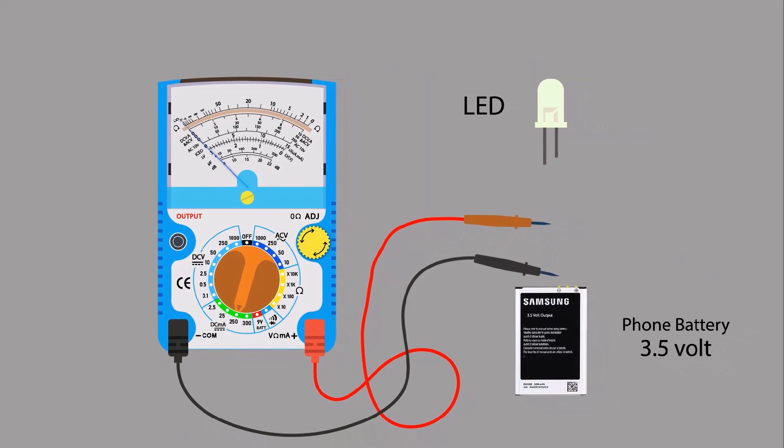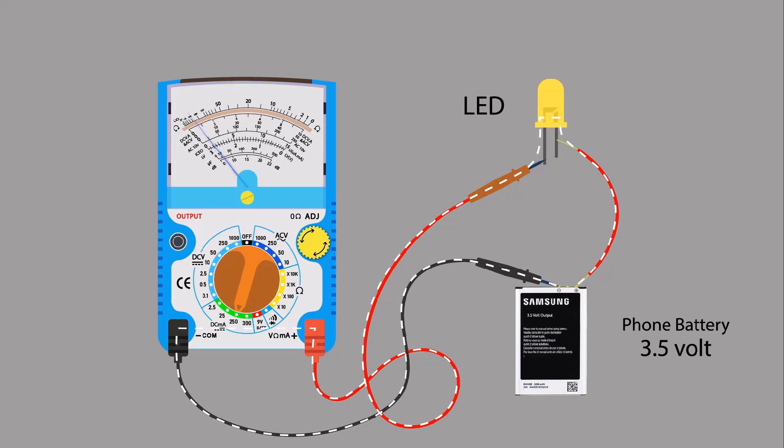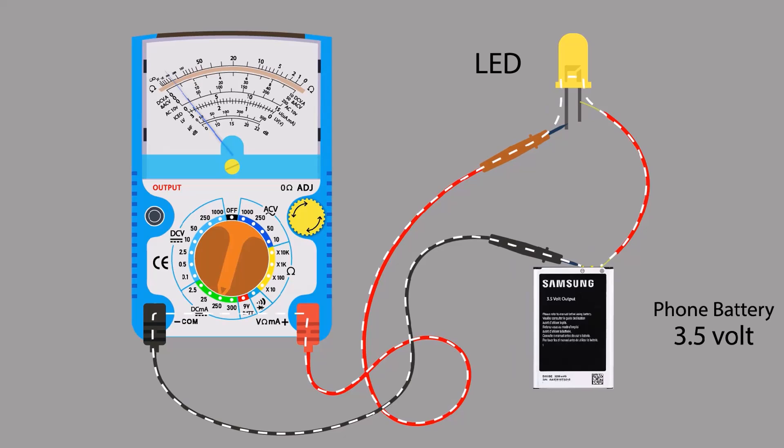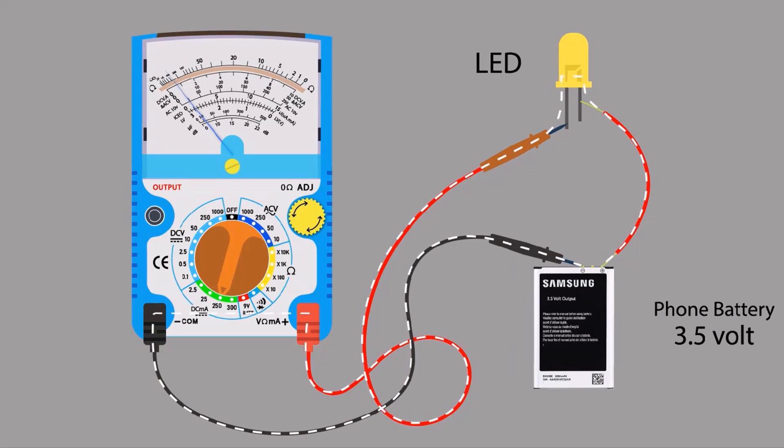Connect black probe of multimeter to negative terminal of battery and red probe of multimeter to longer terminal of LED load. Now, take a piece of wire and use it to connect shorter terminal of LED load to positive terminal of power source. Circuit is completed and current is flowing from negative terminal to positive terminal of battery through the LED lamp. That flowing current, we are measuring.